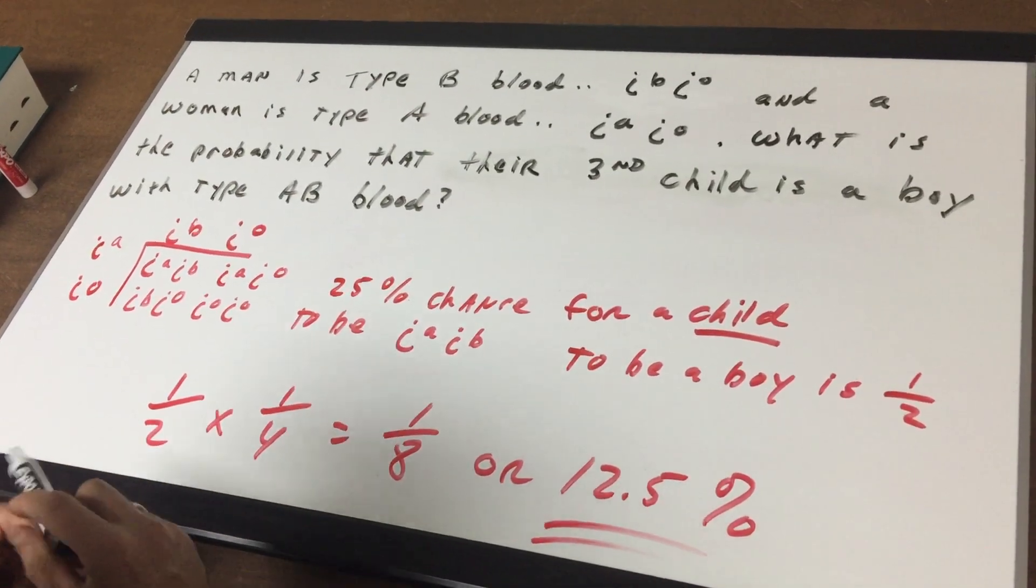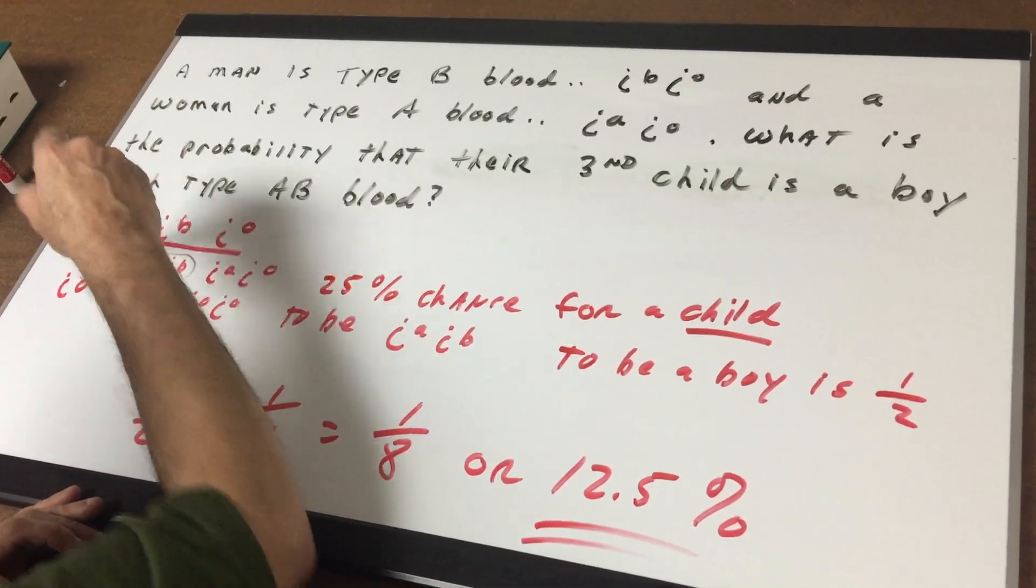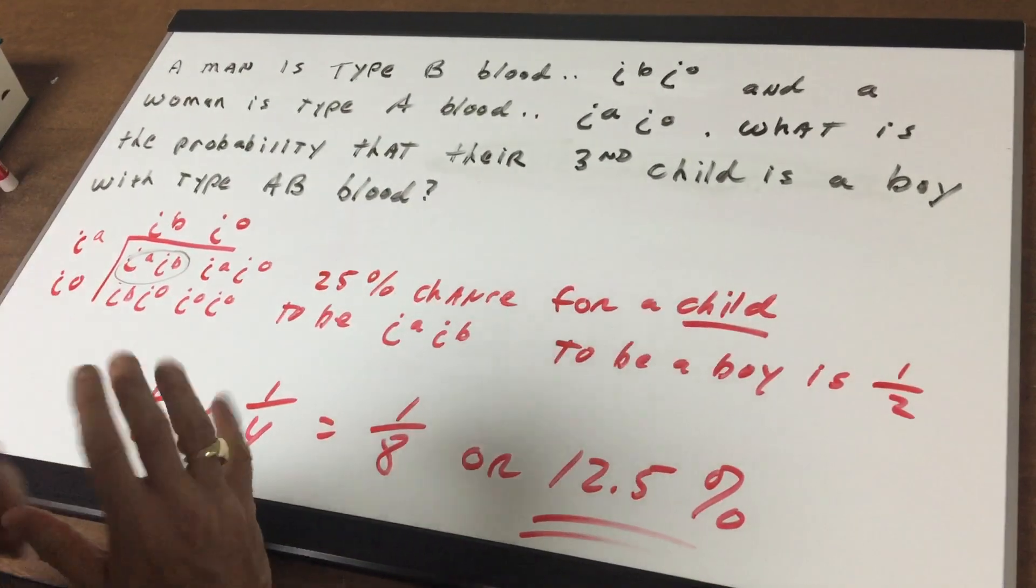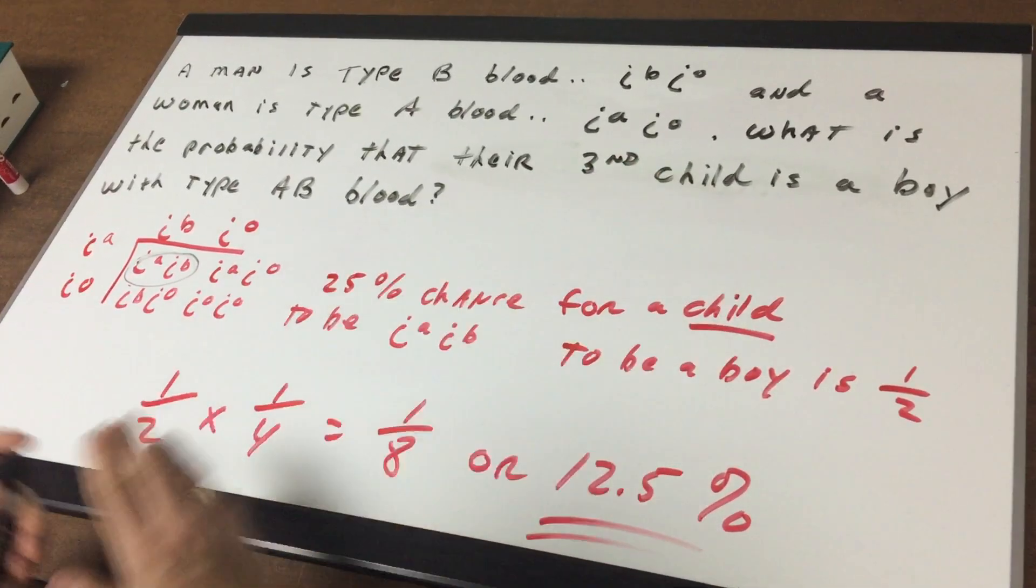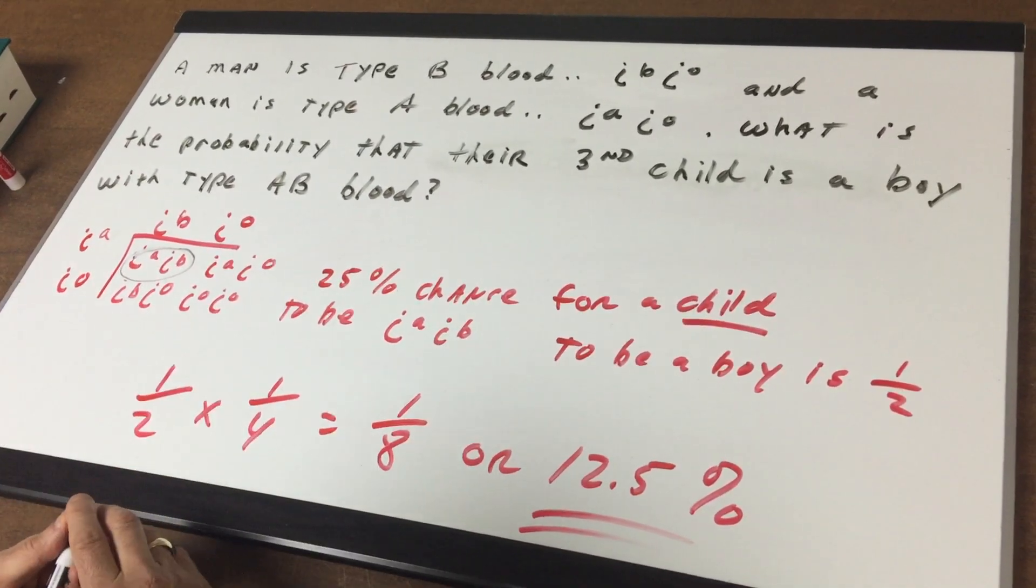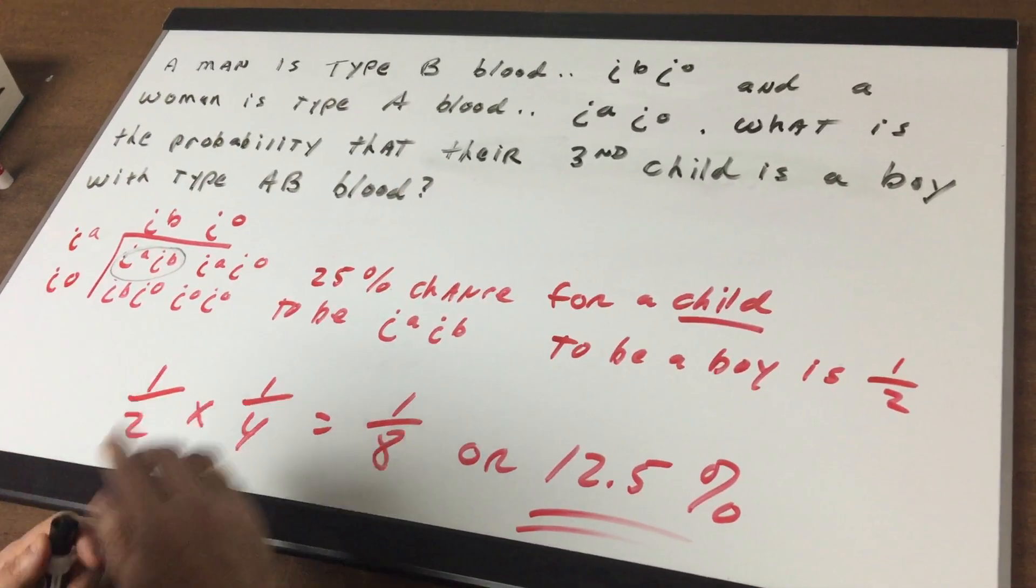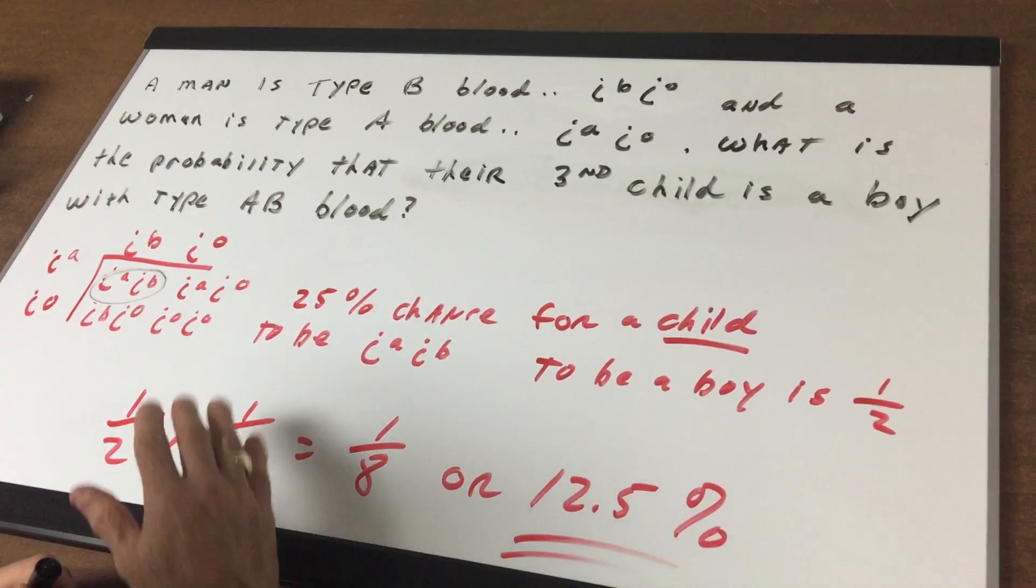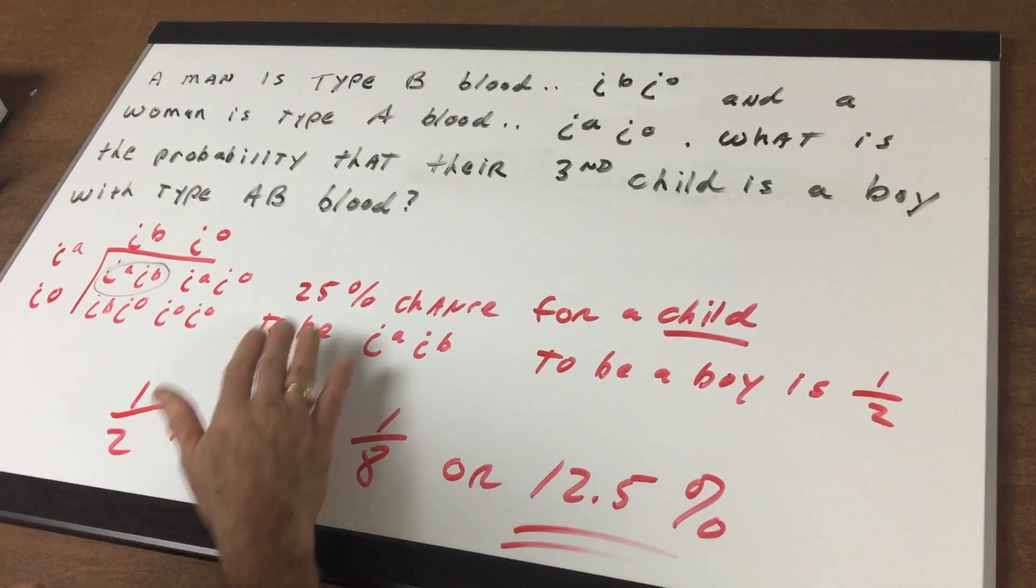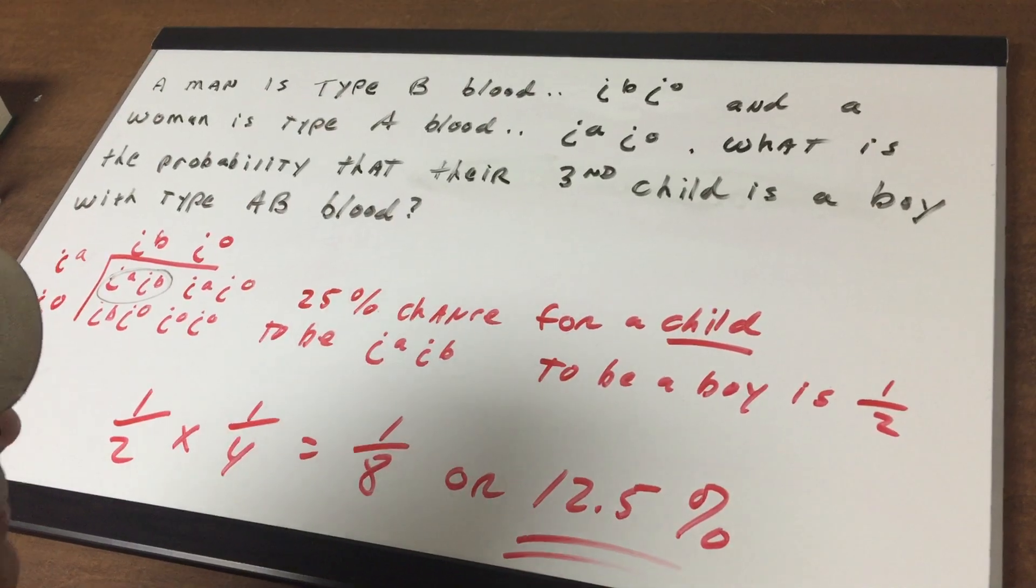So I'm hoping you can see that in order to get type AB blood, you would have a 25% chance. Now, the third child, that's meaningless. That's an independent event. So every event is independent of the next. So whether I had the third child or the second child, that's just piece of information that's not going to be helpful. So no matter how many children you have, each independent event occurs. So there's a 25% chance that this child will be type AB blood.